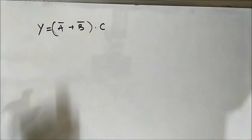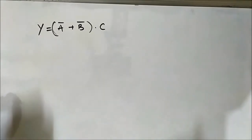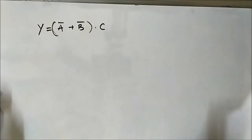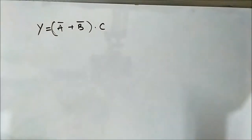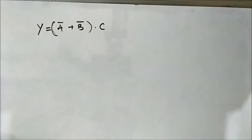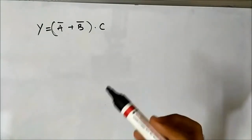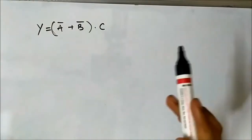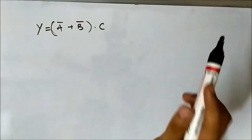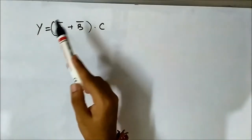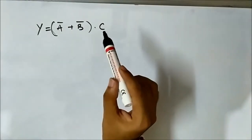Let us discuss some questions. I will start with some simple ones and then move on to more lengthy expressions. This is the first boolean expression that we have to implement using the NOR gate. The basic idea behind implementation of logic expressions using the NOR universal gate is that all the variables should be in a form that can be easily implemented using NOR gates.